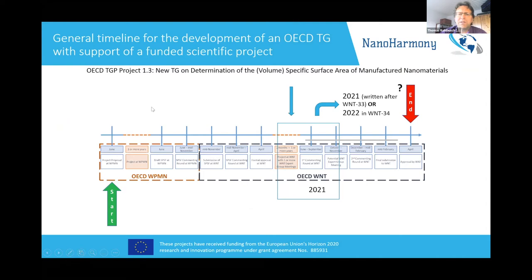You will see this type of slide for each of the projects we discuss. On the left hand side is the start of the OECD process and on the right hand side the end of the OECD process. It is always indicated where we are at each point. You can see here the indication that the project for the volume specific surface area is in 2021 at OECD WNT level.